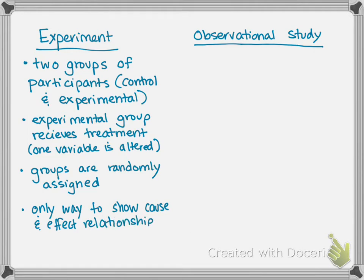If we control every variable in the control group and we only alter one thing in the experimental group, then what we can say is that one variable affected the change in the experimental group. That's the reason why we saw the change. This is very commonly used in medicine — to talk about vaccines and drugs and things like that. We would have an experiment where in the control group there are no vaccines or drugs given, and in the experimental group there are, and we see if that drug has a positive impact, stops those people from getting sick.